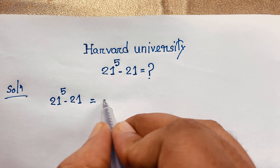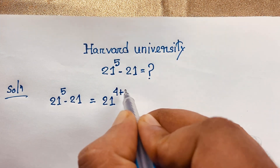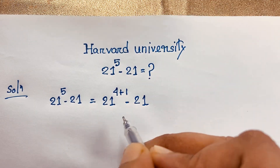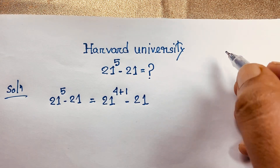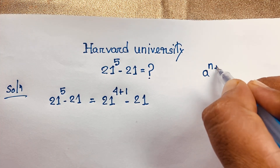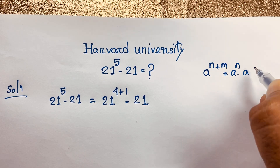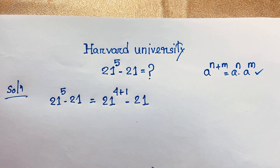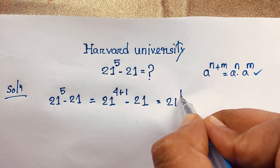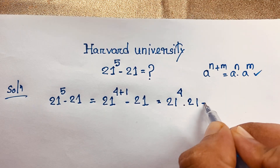You can see 21 to the power 5 — we rewrite the exponent as 4 plus 1, so it becomes 21 to the power (4+1) minus 21. Since 4 plus 1 equals 5, applying the exponential formula a to the power (n+m) equals a to the power n times a to the power m, it becomes 21 to the power 4 times 21 minus 21.